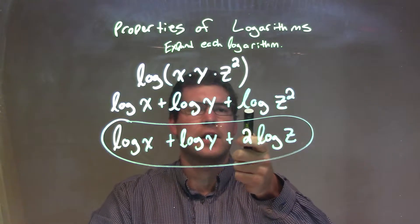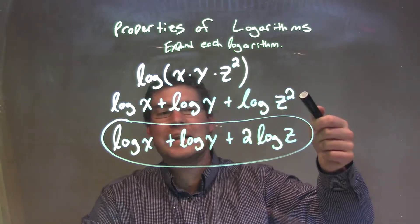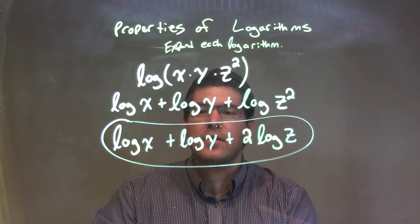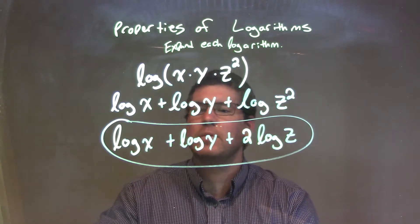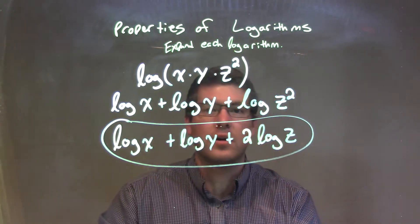We've expanded that with multiplication, log of each one. But then the exponent, that squared or the second power, we need to bring out in front of that specific log, the log of z. This gives us our final expansion. There's nothing else we can do here, which is log of x plus log of y plus 2 log of z.